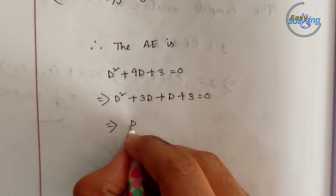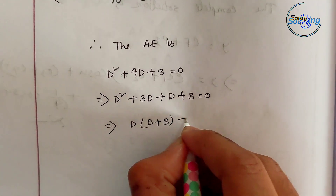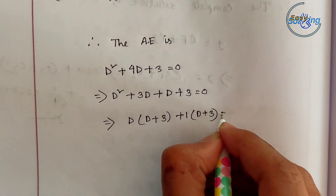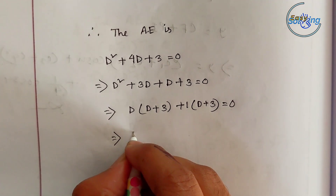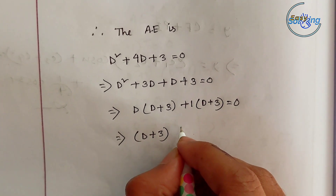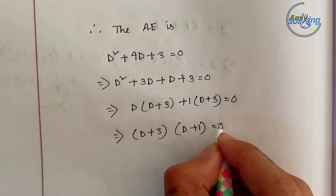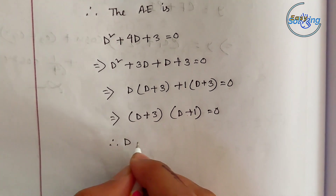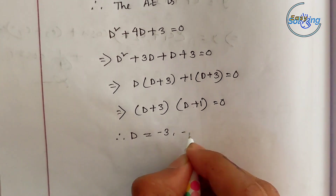We take 3D and D giving a product of 3. Taking common factors: D plus 3, times D plus 1 equals zero. Therefore D is equal to minus 3 and minus 1.